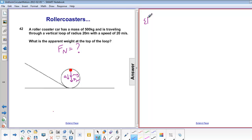Start with our sigma f equals ma. Our sigma f is mg plus fn equals mv squared over r. We can just make everything positive since everything is pointing down.